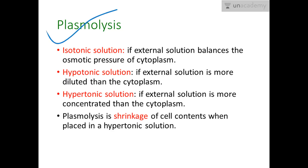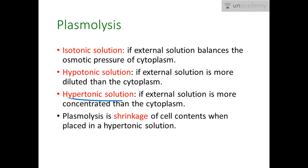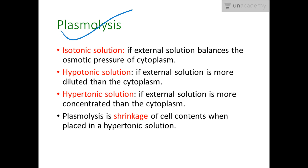Before talking about plasmolysis, let's cover three terms: isotonic — external solution has the same concentration as the cytoplasm; hypotonic — external solution is more dilute; hypertonic — external solution is more concentrated. In a hypertonic solution, plasmolysis takes place. Plasmolysis is the shrinkage of cell contents when placed in a hypertonic solution. Water from inside the cell keeps moving out, the cell loses all its fluid content, and the cell membrane pulls away from the cell wall, ultimately leading to cell death.